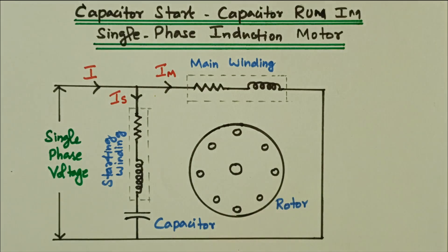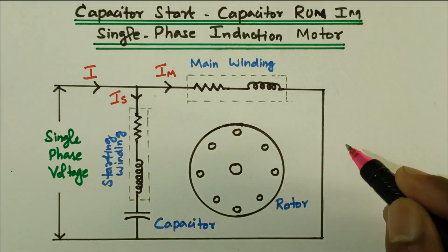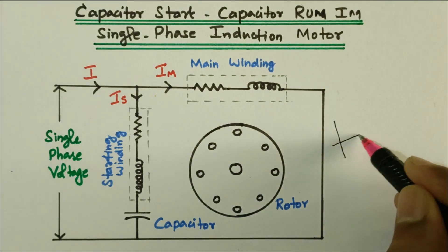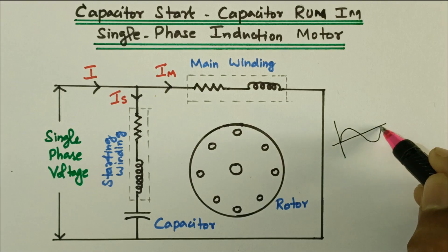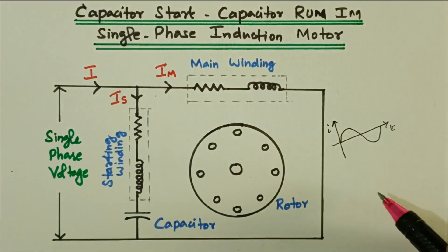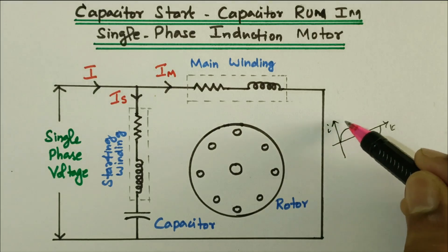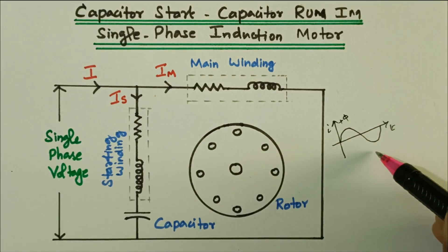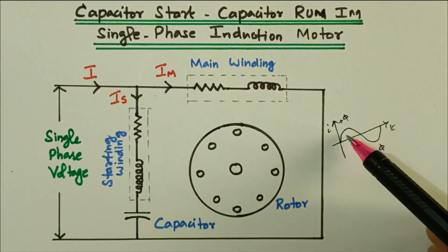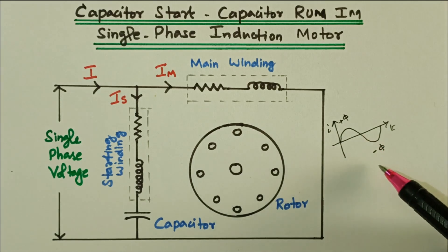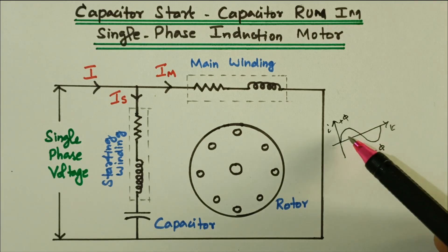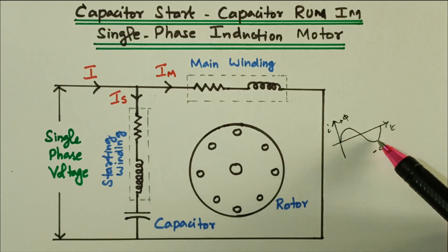The first condition: there should be two windings. The second condition: there should be a 90-degree phase shift between the current flowing through these windings. If we have only one phase, the current flowing through the winding produces alternating flux. During the positive cycle, positive flux is produced; during the negative cycle, negative flux is produced. The average of these two is zero — they cancel out — so the net flux is zero.